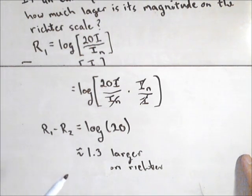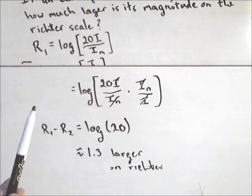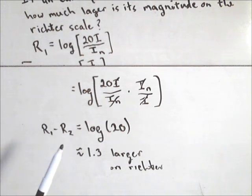You'll see this technique used a lot in these kinds of problems. There's a similar application with sound intensity. Often you'll take the difference in two decibel levels and do something similar. So this technique applies not only to Richter scale problems, but many situations where logarithms are used to measure relative intensity.